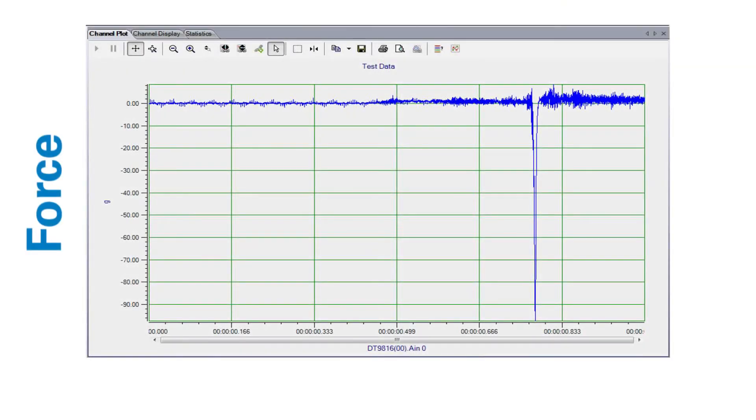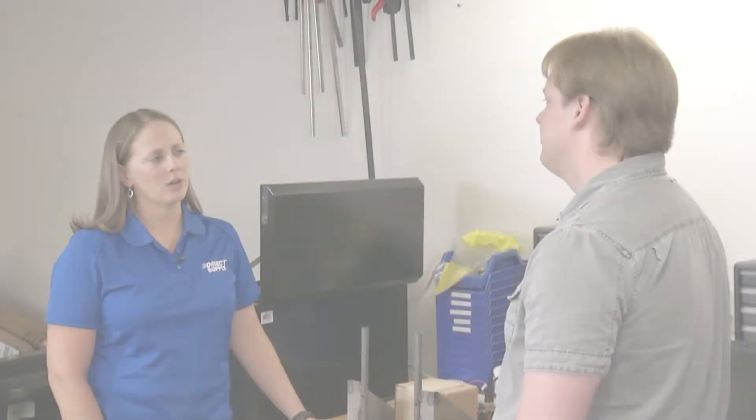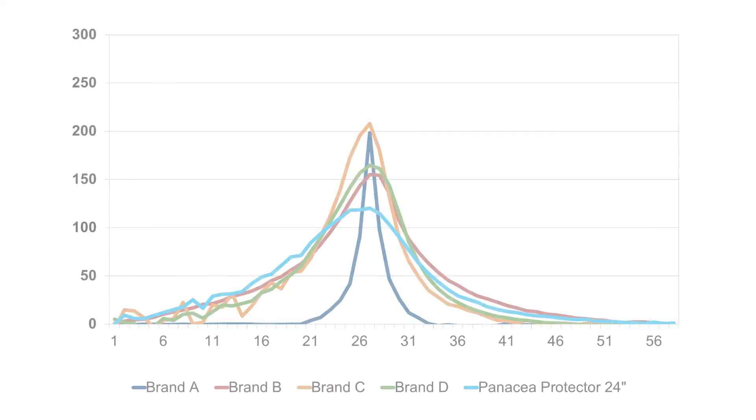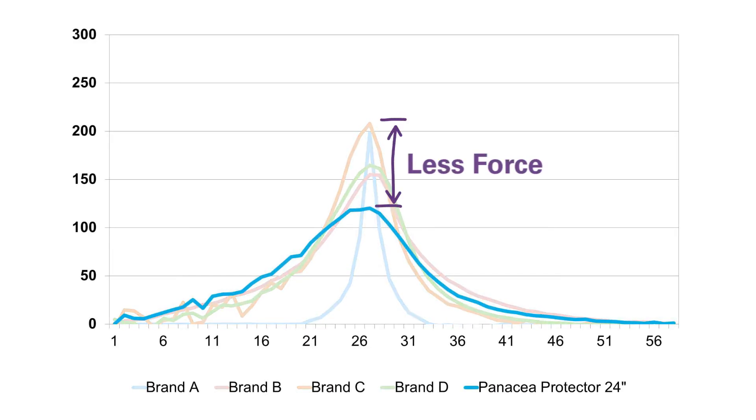One axis represents the force of the impact and the other one represents time. We want to see as few of Gs as possible spread over the greatest amount of time. So fewer Gs over more time means better impact resistance. That's correct and when tested against comparable mats, you can see the protector bedside mat offers a great combination of price and protection.